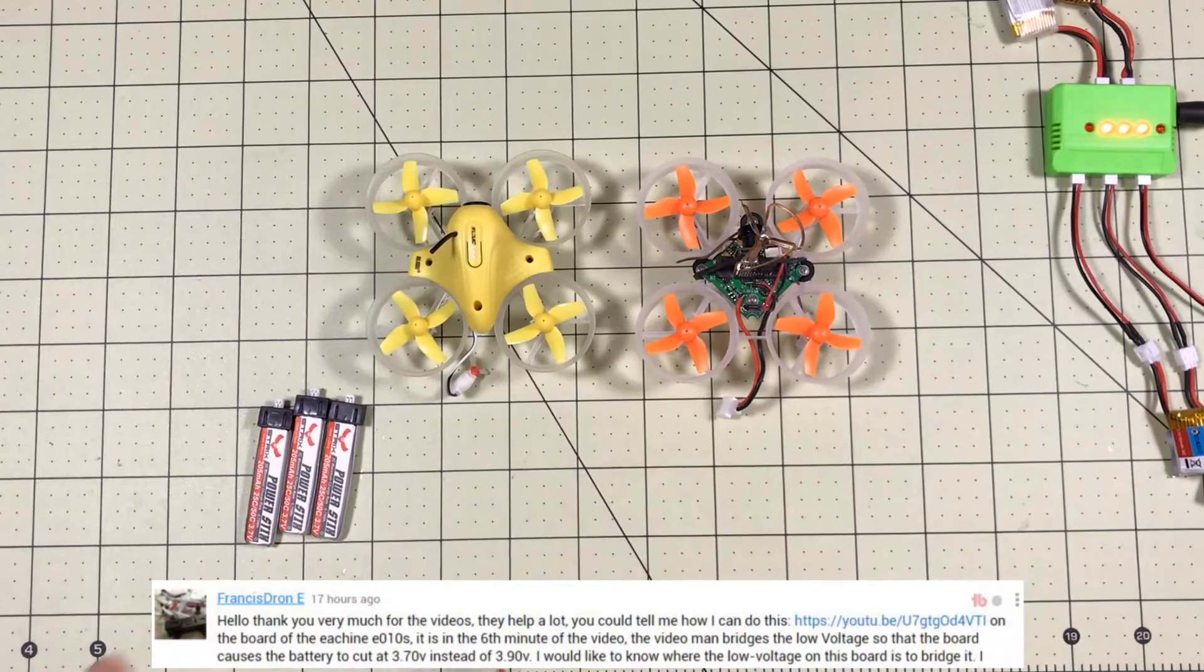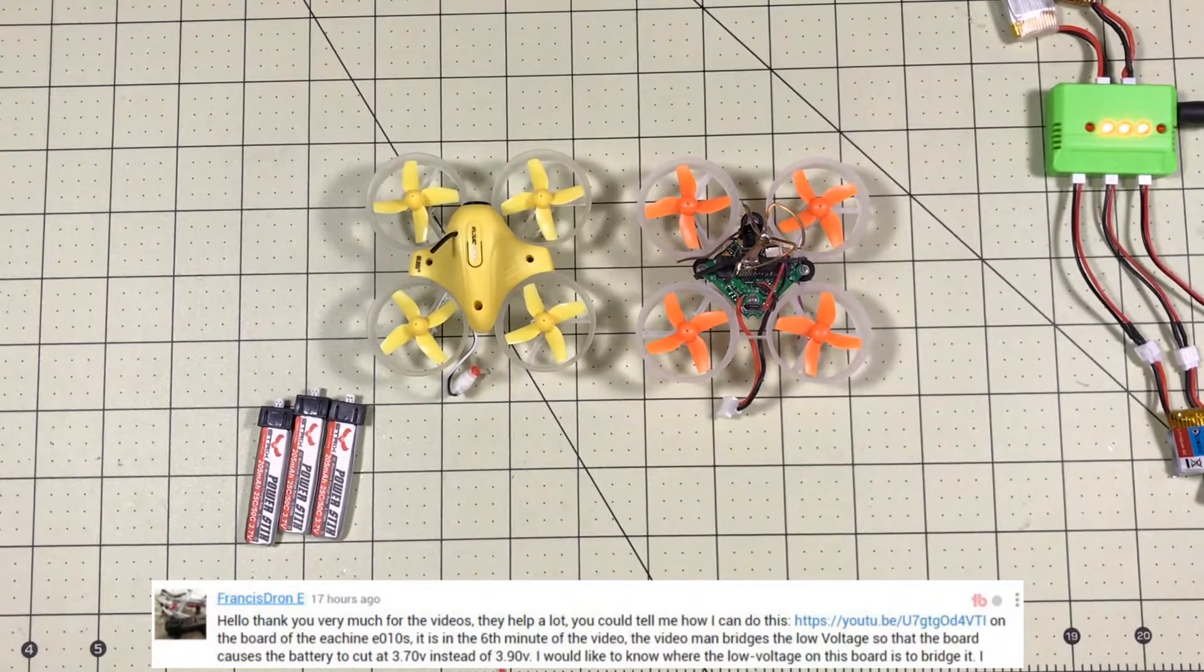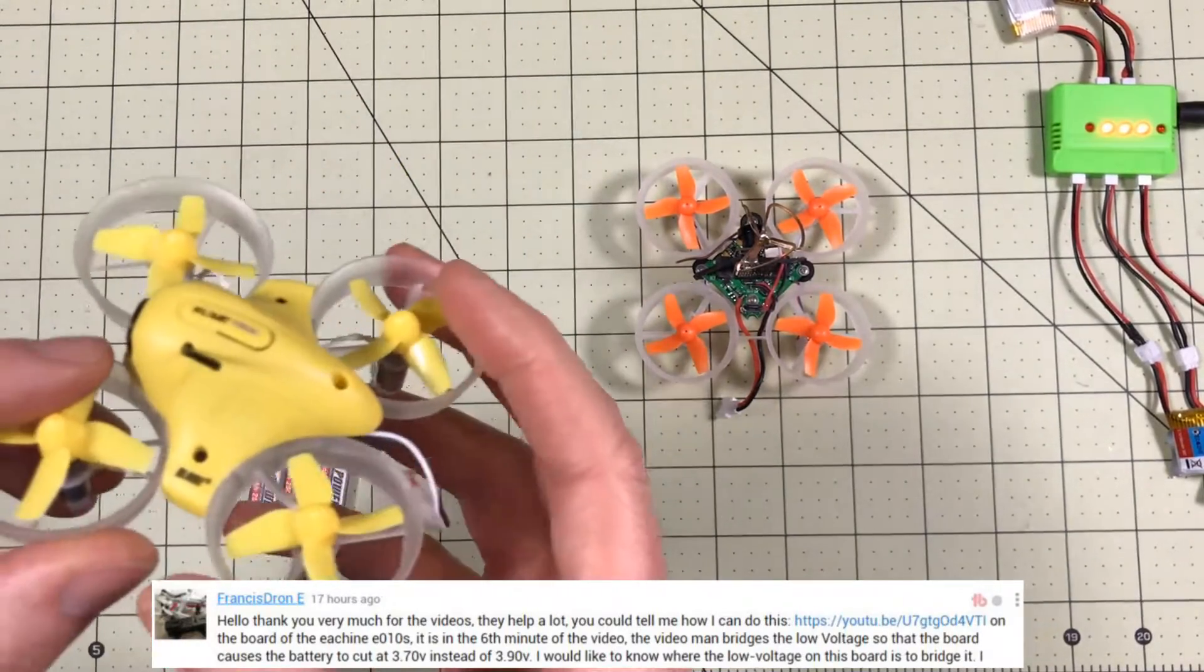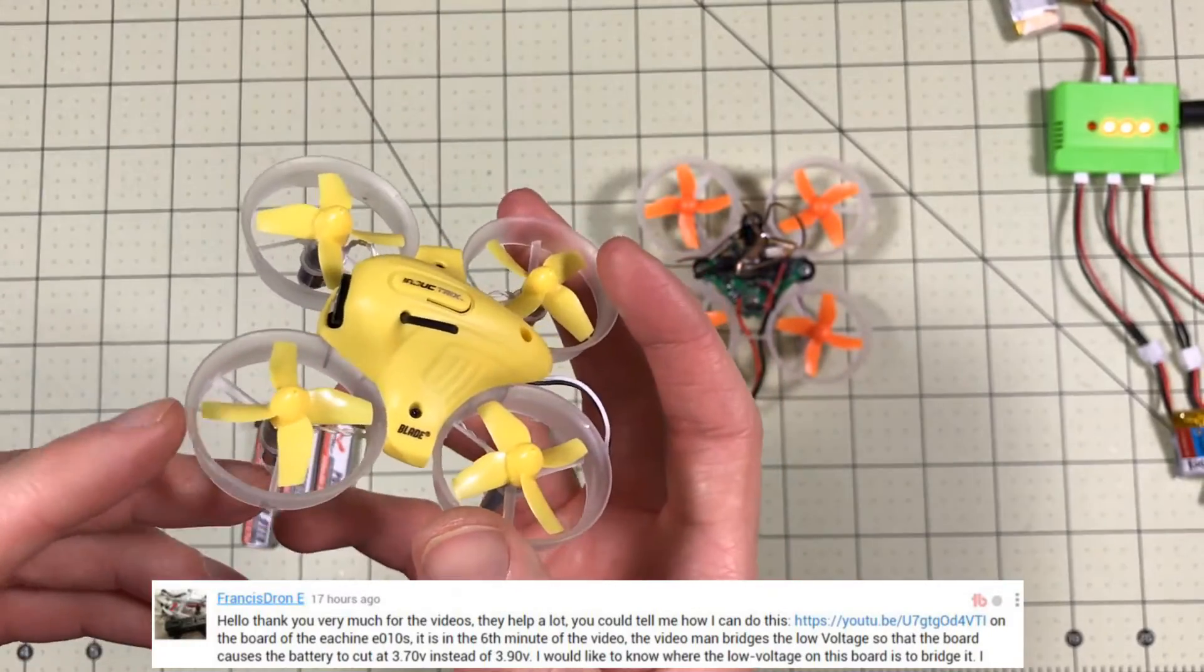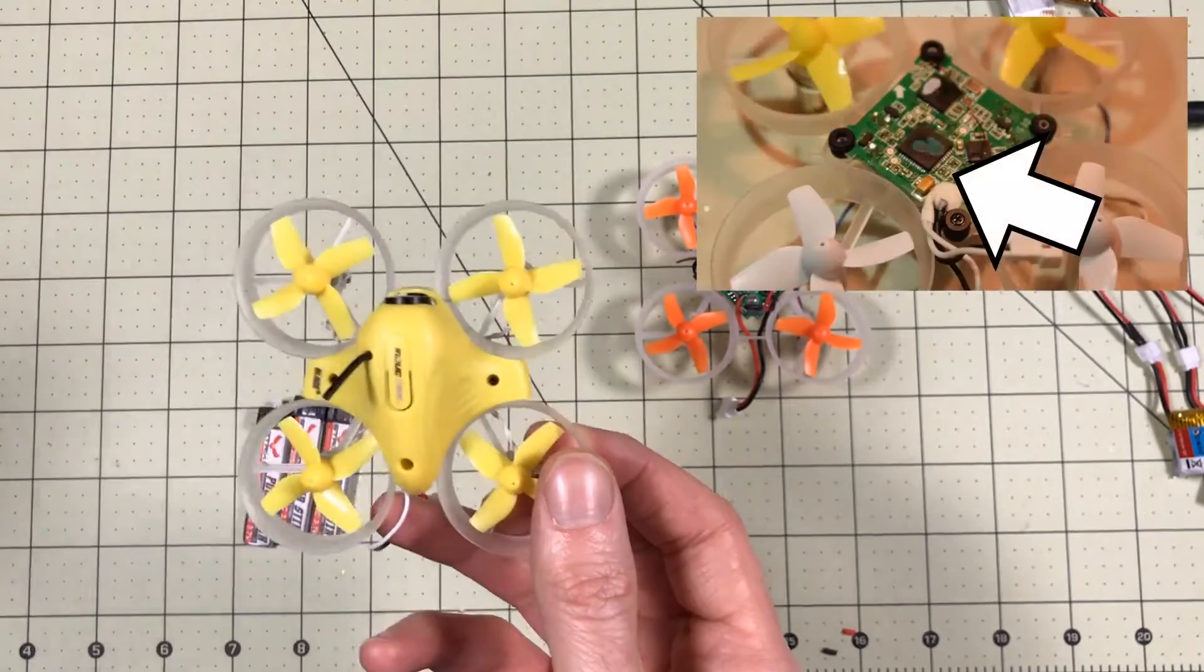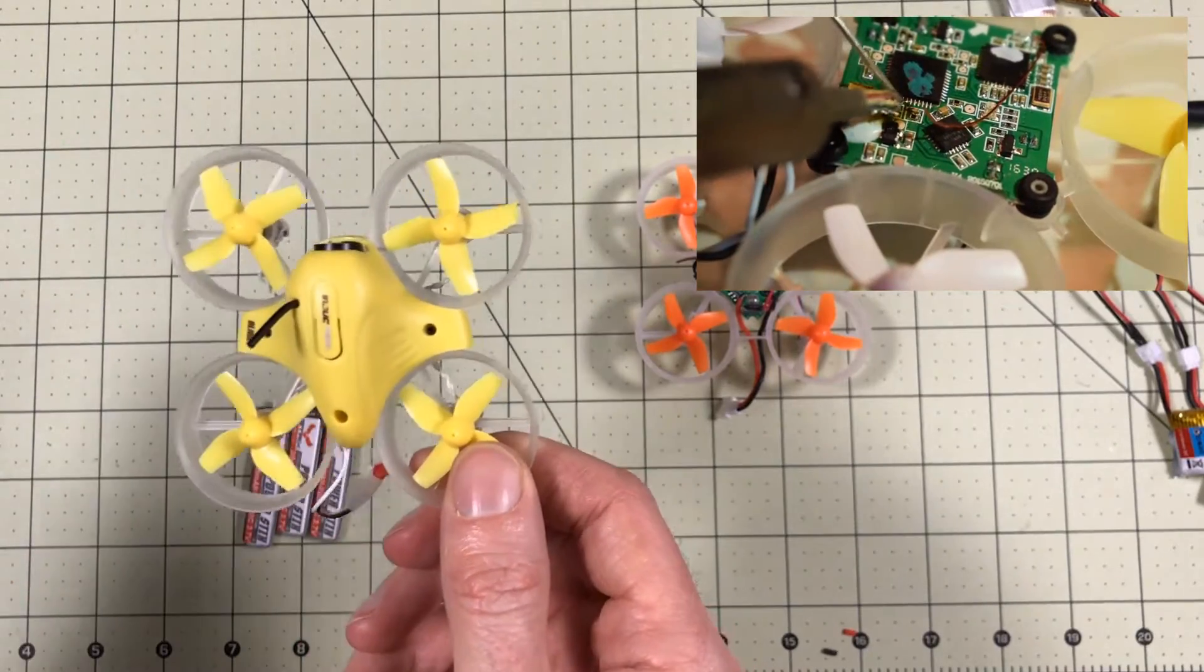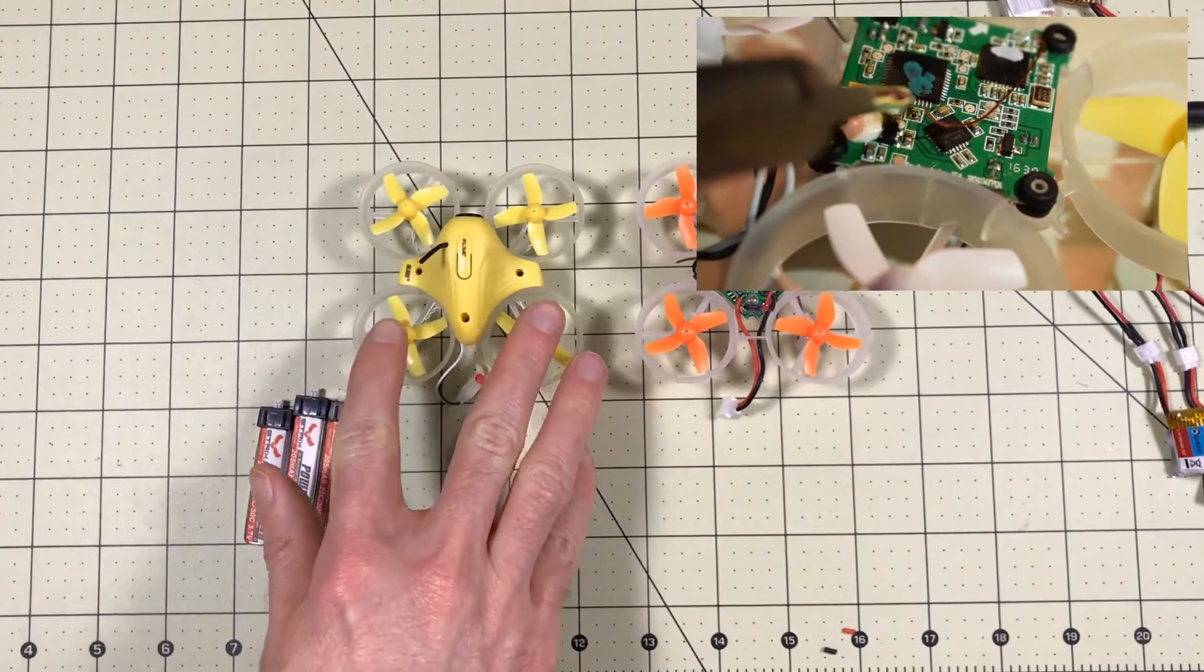But I got a great question submitted by Francis Drone, and he sent us a link to a video where what they're showing is the Inductrix FPV has a very high low voltage cutoff. So at 3.9 volts, it just stops, and I noticed this doesn't have a very long flight time, and it shows a way to fix that.